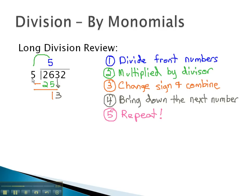We divide the front numbers, 5 into 13, twice. We then multiply the 2 by the divisor 5 and get 10. We change the sign on the 10 and combine to get 3.